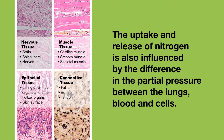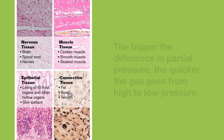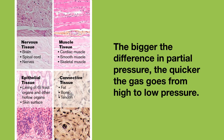The other thing that influences the uptake and release of nitrogen in tissues is the difference in partial pressure between your lungs, the blood and your cells. The bigger the difference in partial pressure — the higher the pressure gradient — the quicker the gas goes from the high pressure to the low pressure.